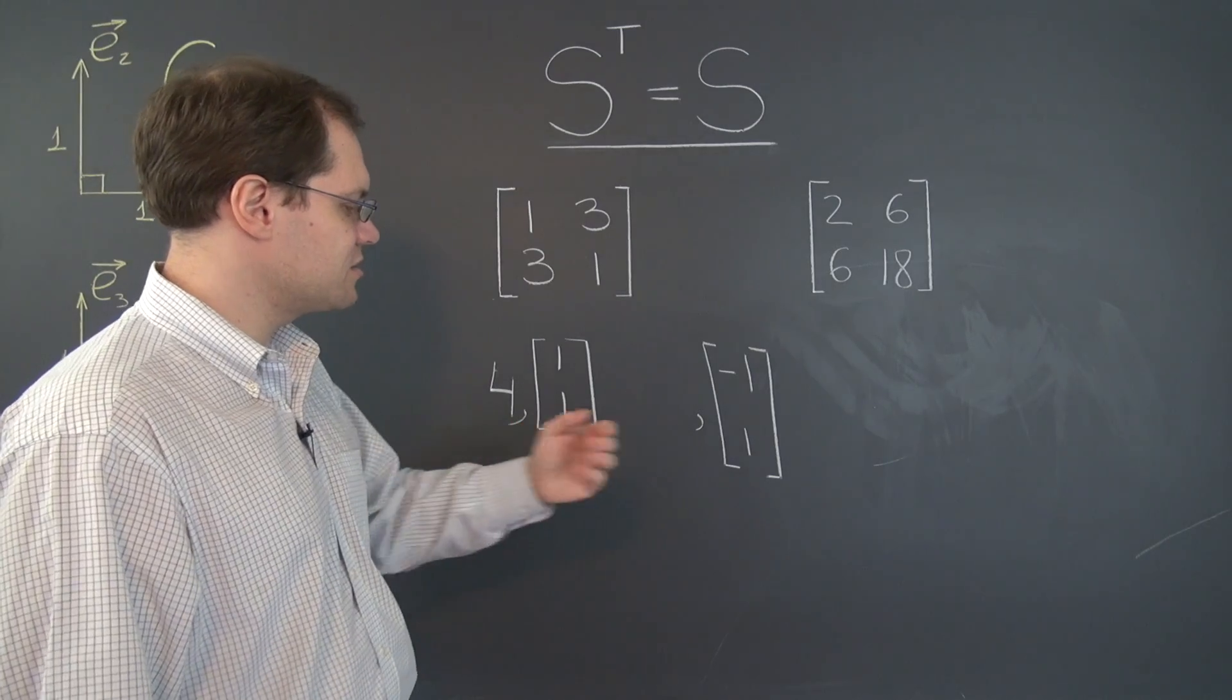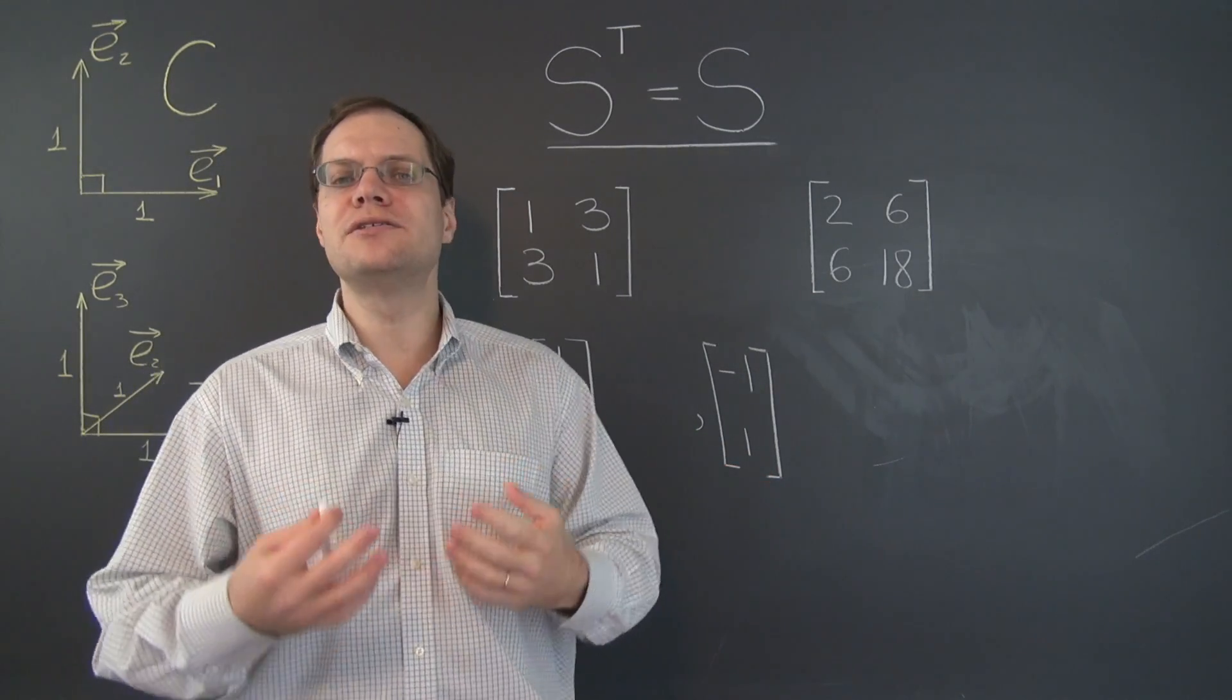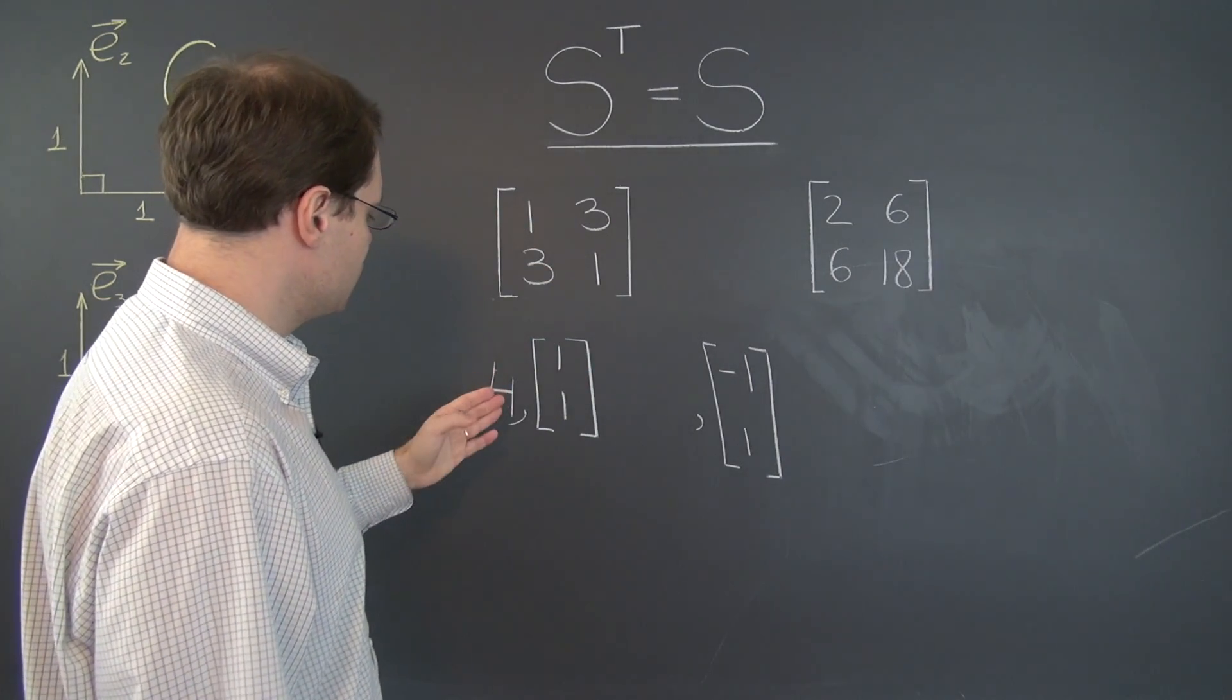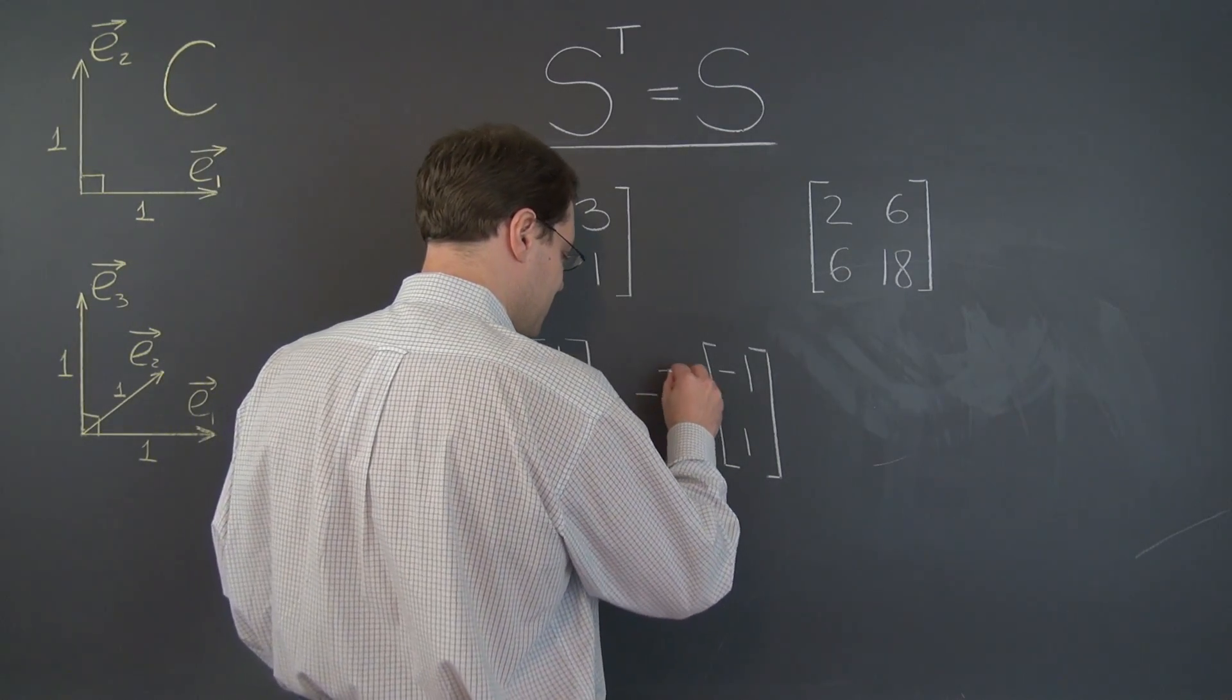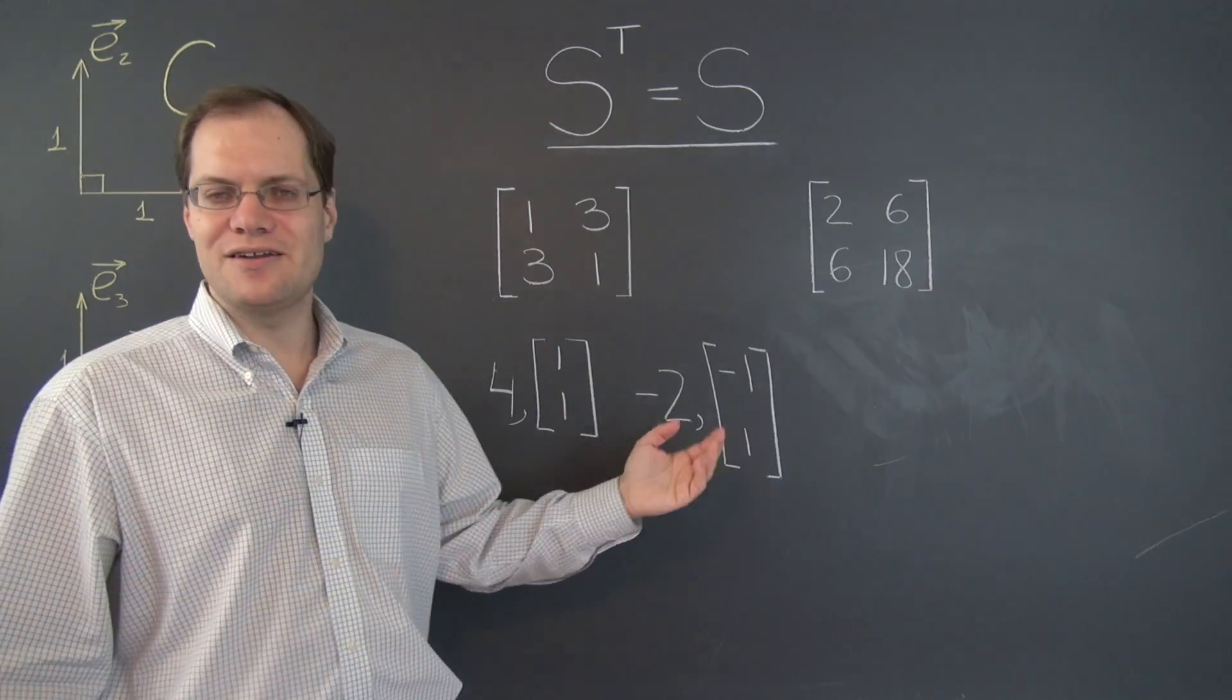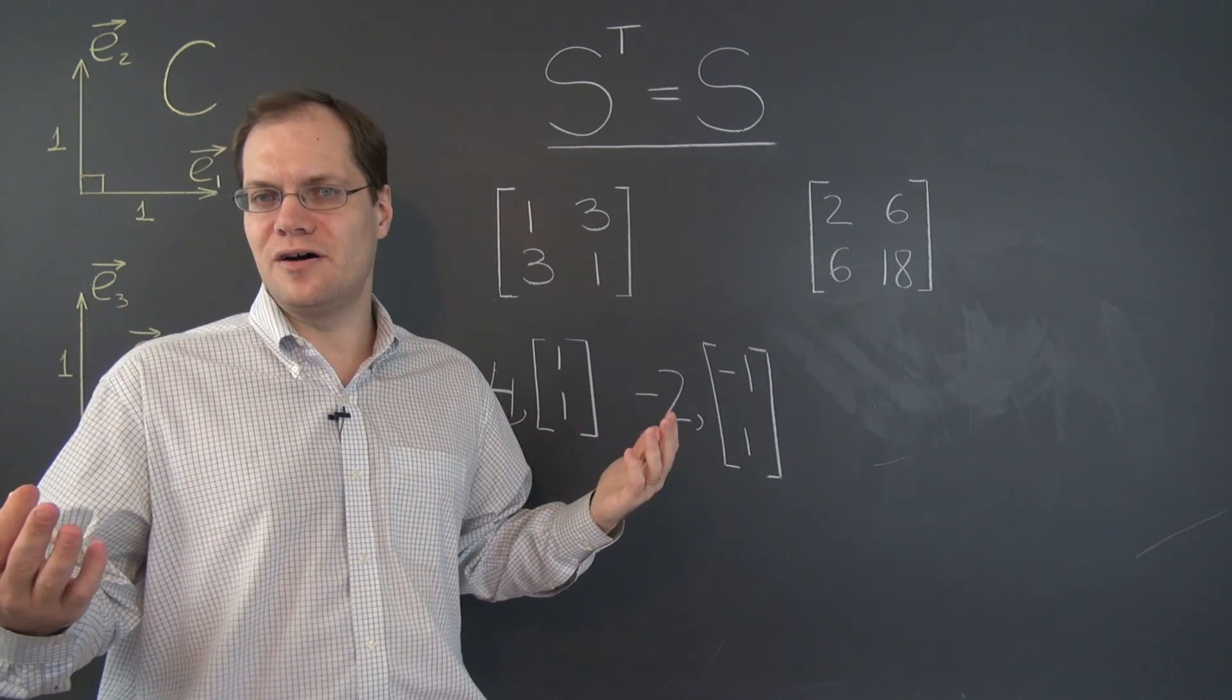So if this is one of the eigenvectors, this one has to be the other eigenvector. And of course, the other eigenvalue comes from the trace. Trace equals 2. One of them is 4, so the other one must be negative 2 so that their sum equals the trace. And voila, we have the entire spectrum of this matrix without any work at all.